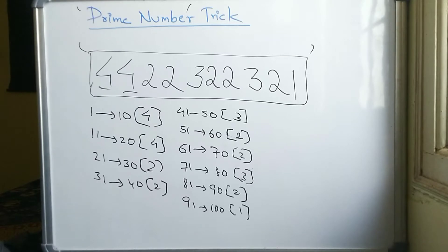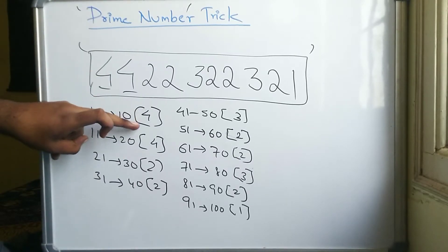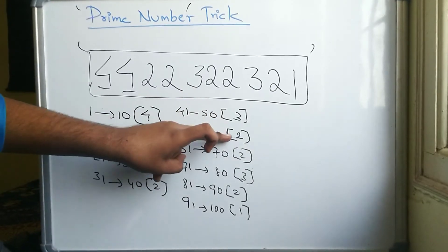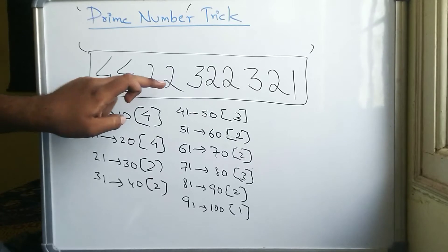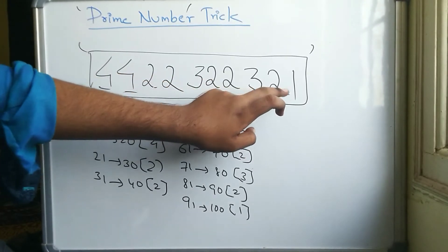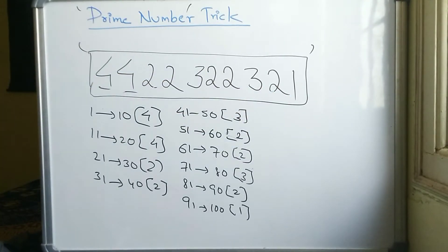Look, here you can see this number directly. Starting from here: 4, 4, 2, 2, 3, 2, 2, 3, 2, 1. This number sequence matches the count of prime numbers in each range.